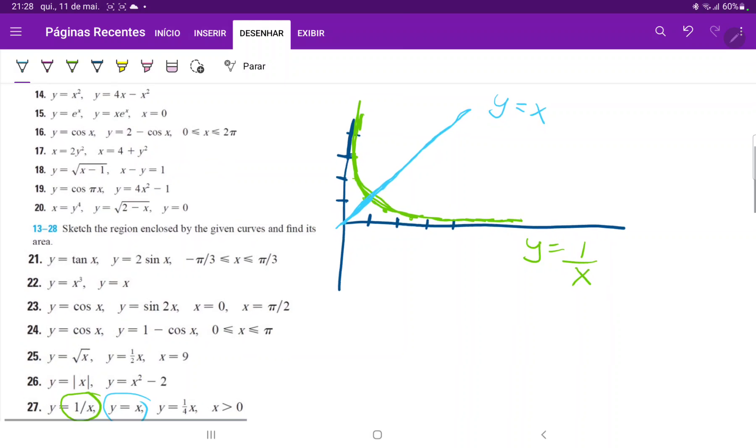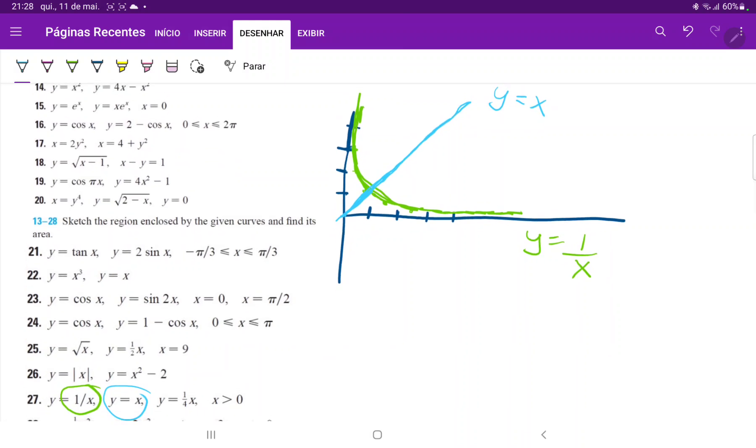This is y equals x. And now, lastly, let's draw the curve y equals 1 fourth x. This is also a straight line that goes through 0, 0, but it goes through the point 4, 1. So it goes through about here.